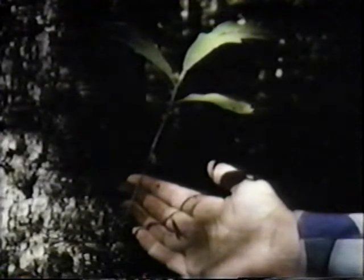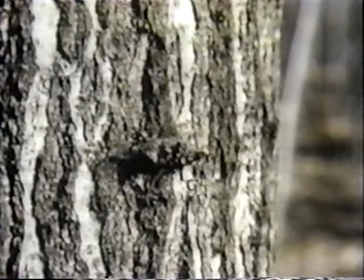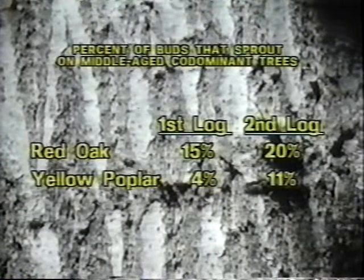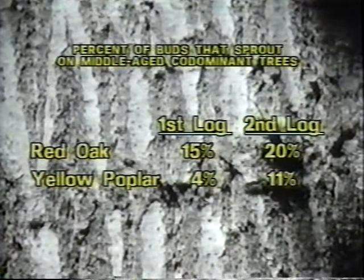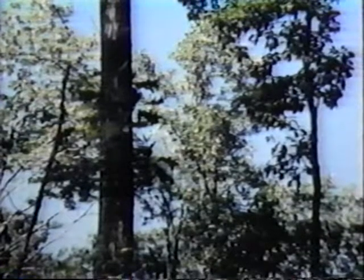Avoid selecting trees prone to this deficiency by looking for existing branches. Look also for dormant buds. Research from the Northeastern Forest Experiment Station in Parsons, West Virginia, reveals that we can expect approximately 15% of dormant buds on the butt log of red oak trees to sprout. For yellow poplar, only about 4% will sprout. Contrary to what might be expected, there is no evidence to indicate that leaving mid and understory trees to provide shade has any significant inhibiting effect on epicormic branching.